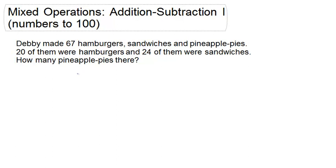So we know that the 67 represents hamburgers, sandwiches, and pineapple pies. Then it says that 20 were hamburgers. So if we subtract 20 from 67, we're going to get sandwiches and pineapple pies, which is 47.